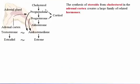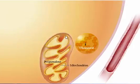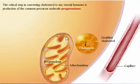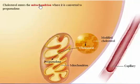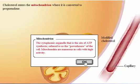The synthesis of steroids from cholesterol creates a large family of related hormones. The type of enzymes present in a given cell determines which steroid or steroids that cell produces. Recall that cortisol is produced by the inner portion of the adrenal cortex. Adrenal cortical cells store a modified form of cholesterol in lipid droplets. Synthesis begins as cholesterol is released from storage. The critical step in converting cholesterol to any steroid hormone is production of the common precursor molecule, pregnenolone. Enzymes for the production of pregnenolone reside on the inner mitochondrial membrane, where cholesterol is converted to pregnenolone.